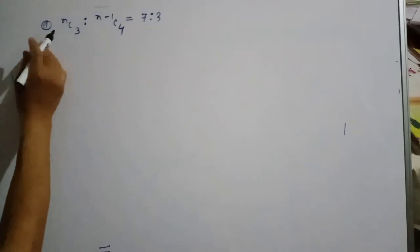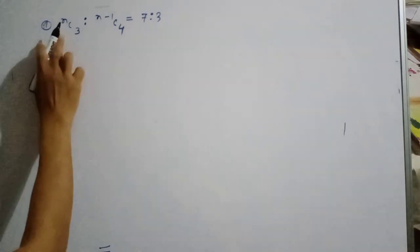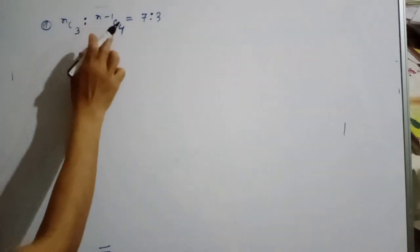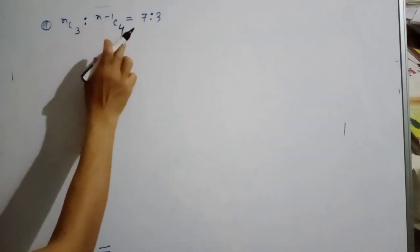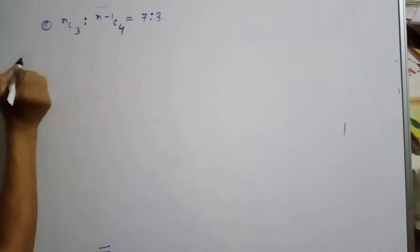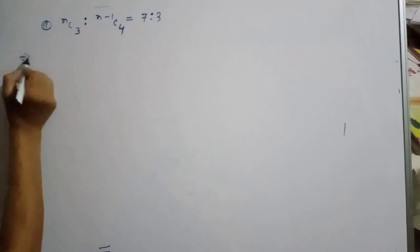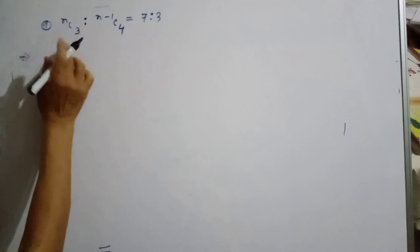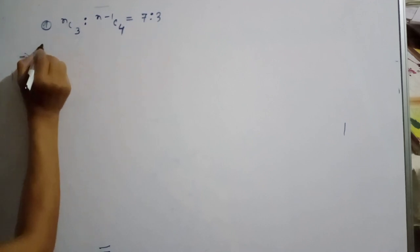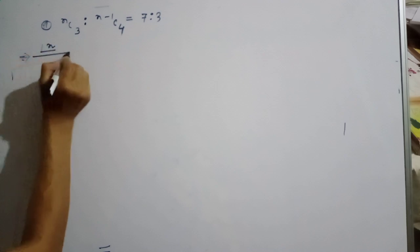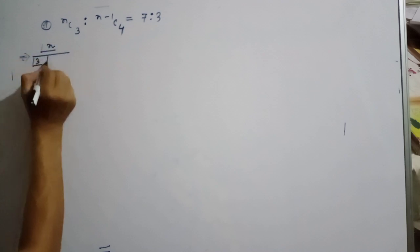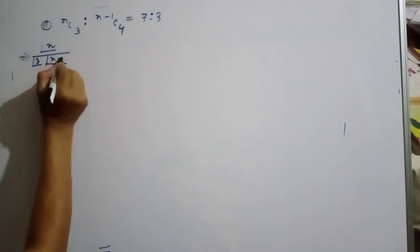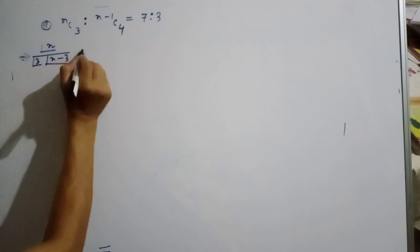Question number 2: nC3 is to (n-1)C4 equals 7 is to 3.